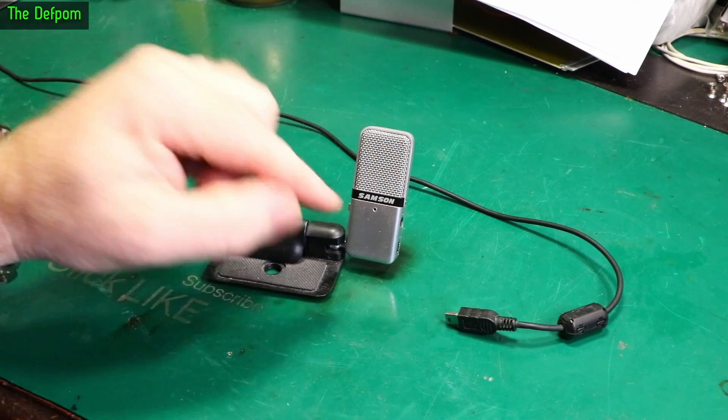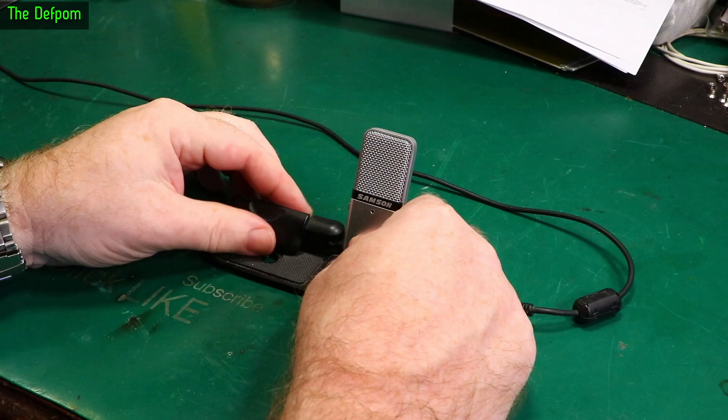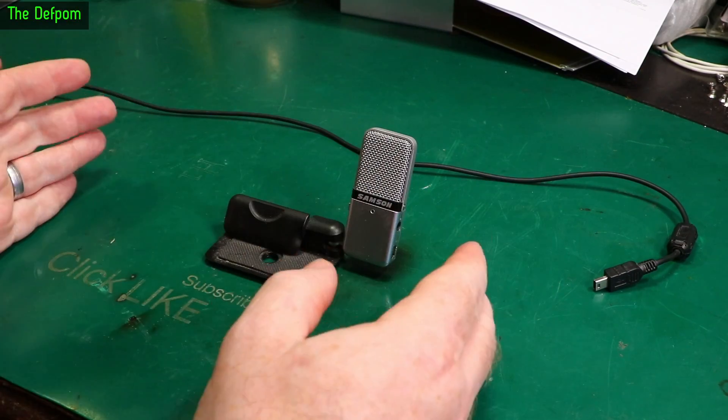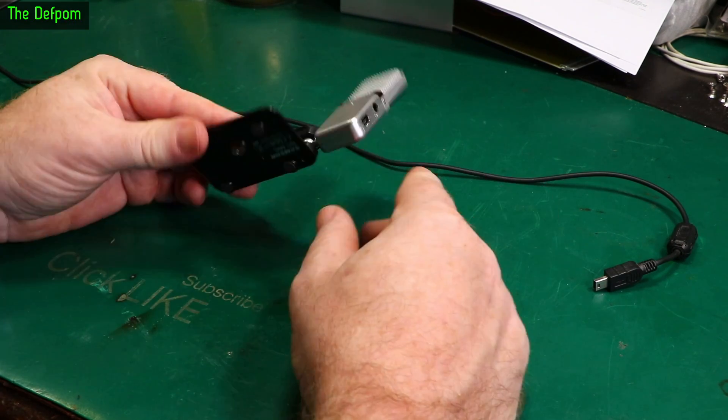On the bench today is one of my microphones, my Samsung Go mic. This sits on my desk and has been sitting there for years. I use this for my live streams. When I'm live streaming, I have this microphone over by my computer, so when you see me right in front of the webcam in a face shot sort of thing, this is the microphone I'm using.